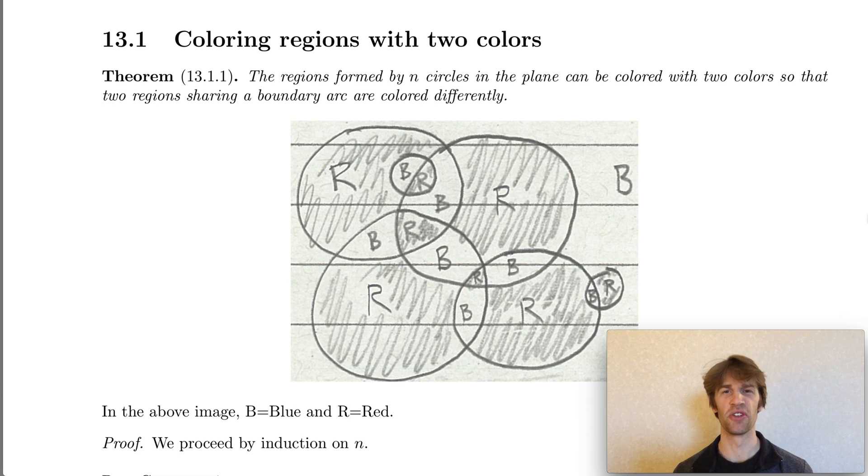I would like to give a brief review of Section 13.1, coloring regions in the plane with two colors. The main theorem in this section is 13.1.1, and it states that if you draw circles in the plane, then you can color the resulting regions with only two colors and furthermore satisfy the property that adjacent regions are colored differently.